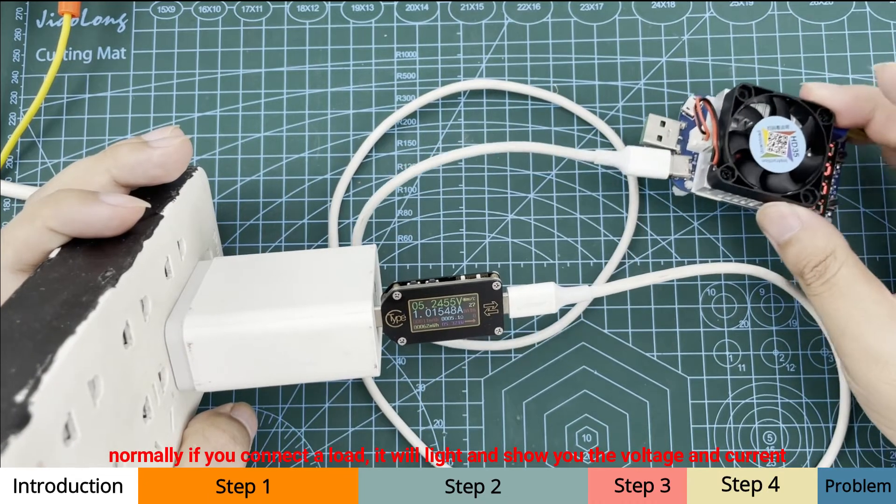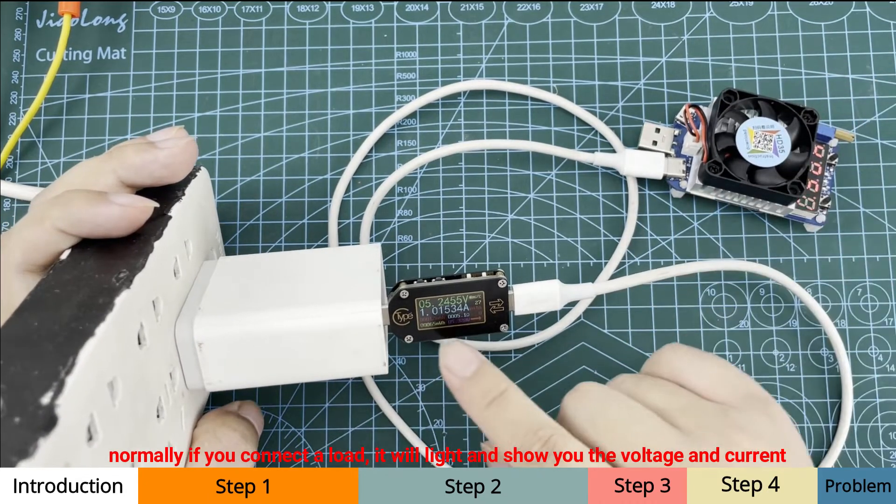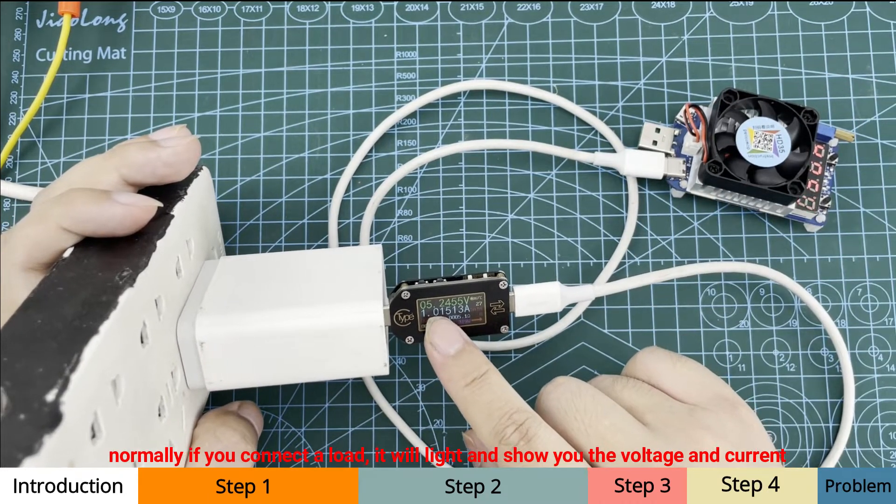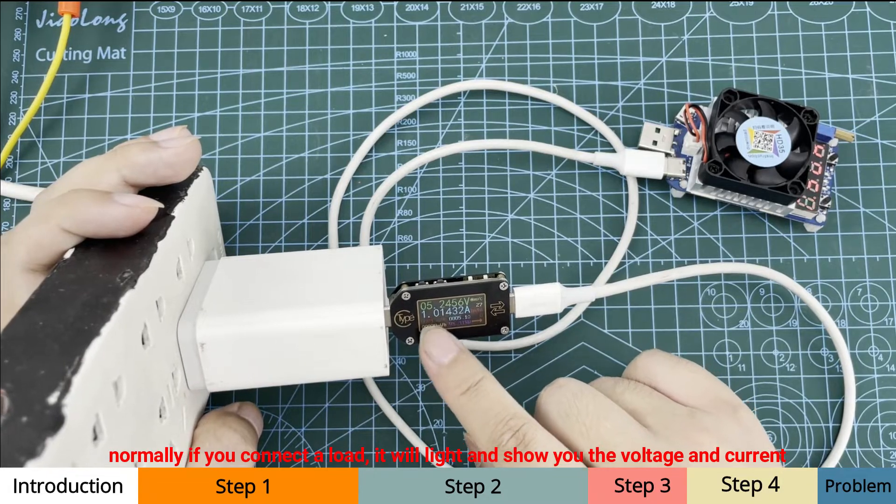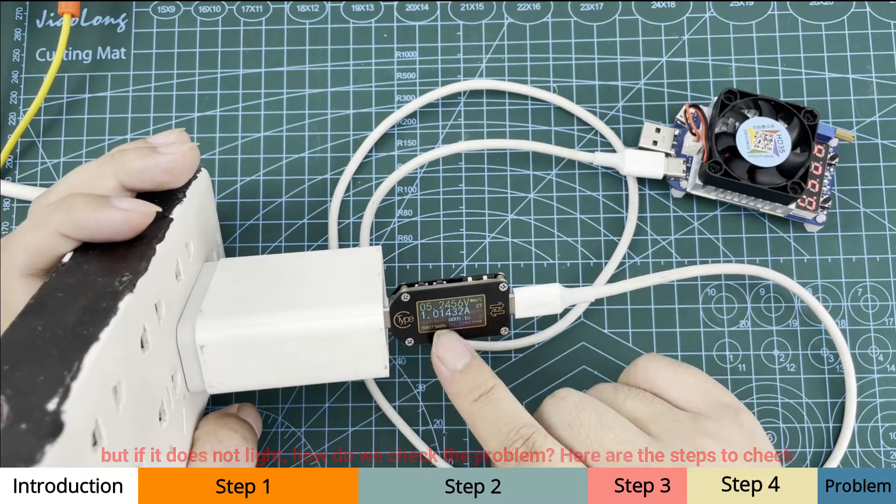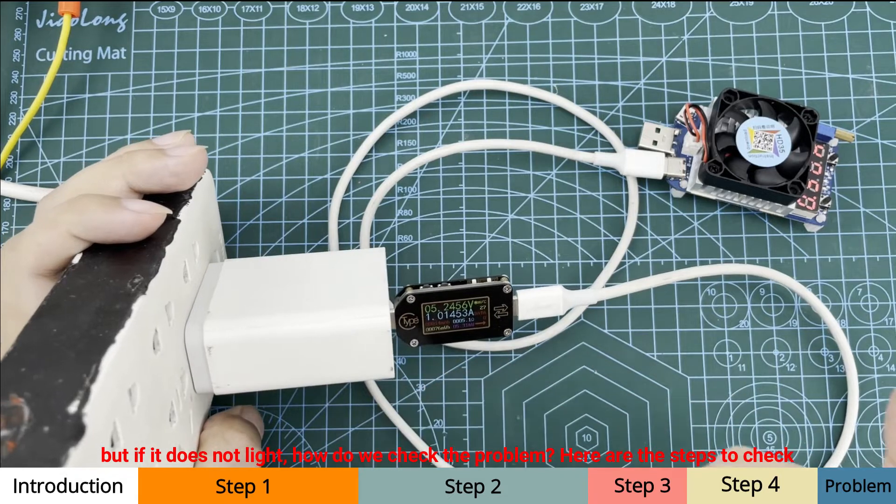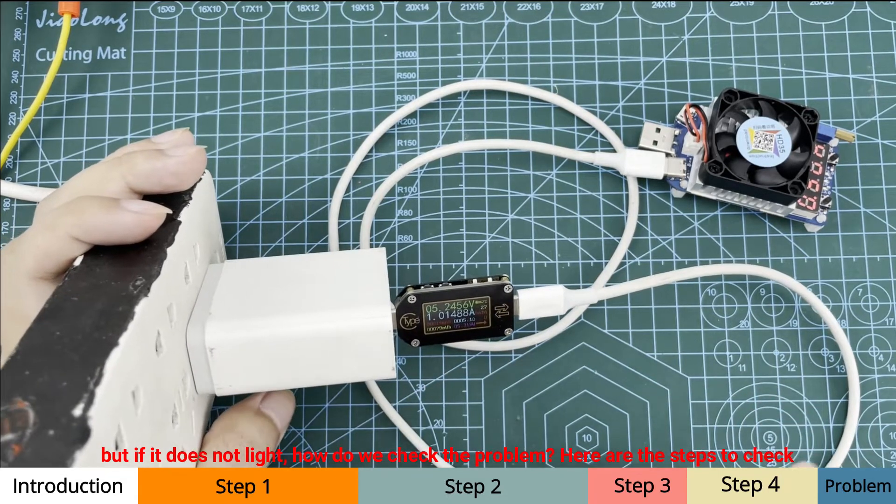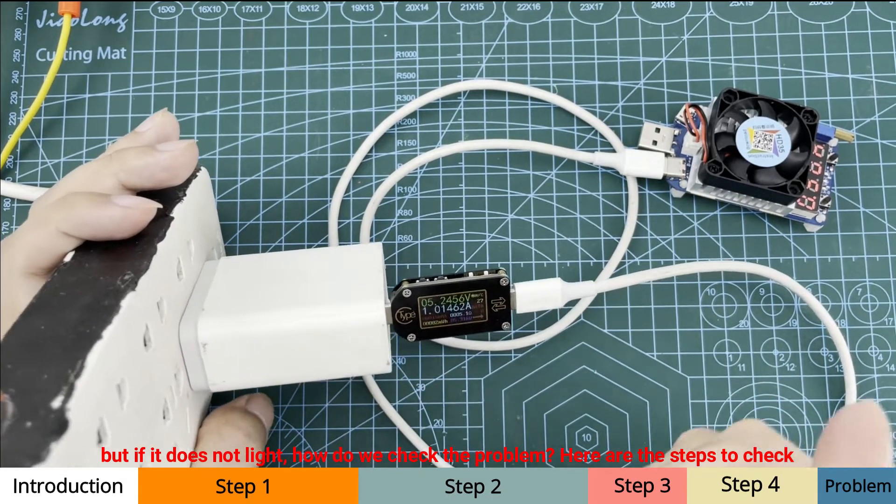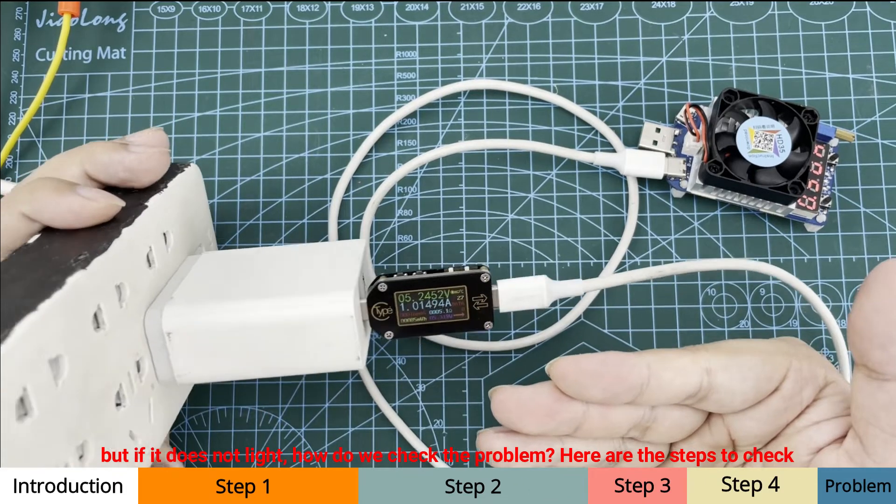Normally if you connect a load, the meter will light and show you the voltage and current. But if it does not light, how do we check the problem? Here are the steps to check the problem.